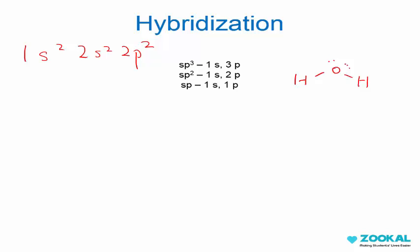Sp2 hybridization applies more for trigonal planar molecules. One example that you know would be ethene. In this case the carbon here has three bonds so it's in a trigonal planar state and the unhybridized p orbital would form the pi bond.